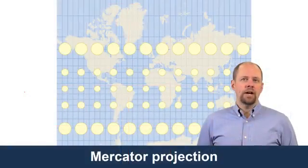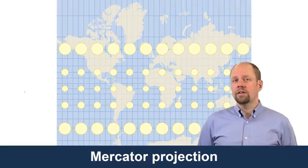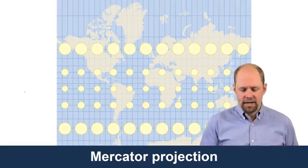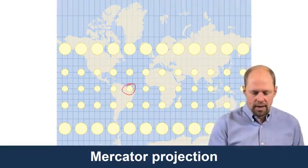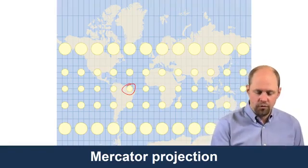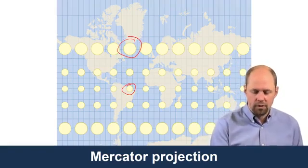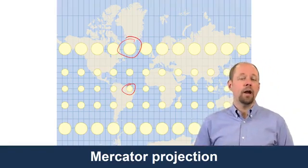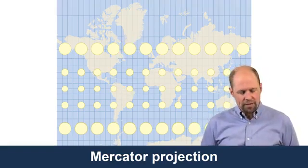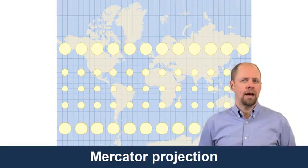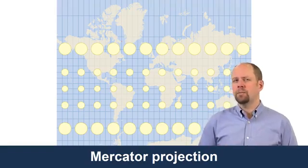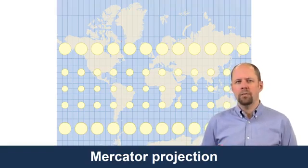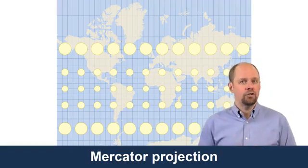With the Mercator projection, we know that there's distortion that takes place. If we look at the Tissot's indicatrices here — these circles — the circles are still circles as we move north and south, but they're increasing in size, so areas are being distorted. You may think: why are we talking about that in this section? Because UTM is based on Mercator, and that may not seem intuitive to begin with, but let's follow the logic here.